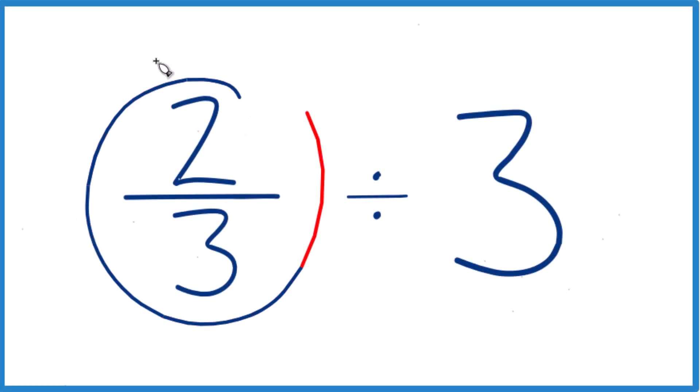So let's figure out two-thirds divided by three. Here's how you do it. So two-thirds, that's less than one. So we're trying to see how many times three goes into a number that's less than one. So we should end up with a pretty small number.